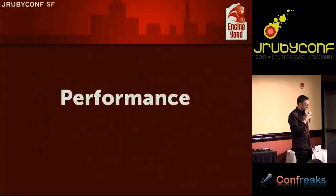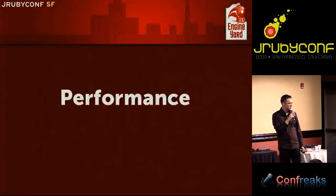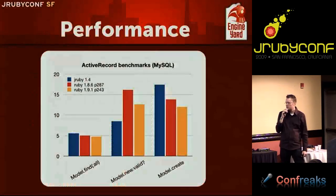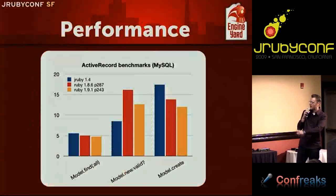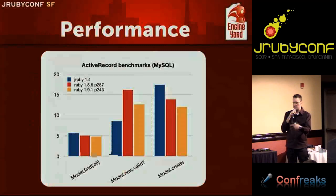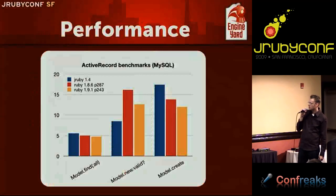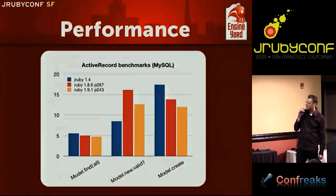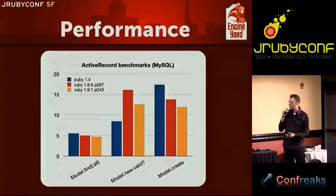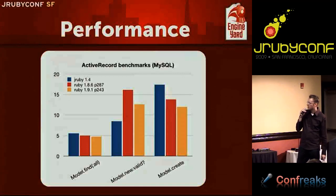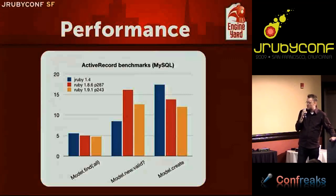Performance has been the big elephant in the room for us with Rails. Looking at simple ActiveRecord benchmarks from the ActiveRecord JDBC project — things like find_all, create, and model.new.valid in a loop — it shows that ActiveRecord JDBC is actually pretty competitive. It loses a little bit on the write side, but on the read side it's competitive. For pure in-memory operations like validation it has no problems, since we're probably not touching the JDBC code at all there.